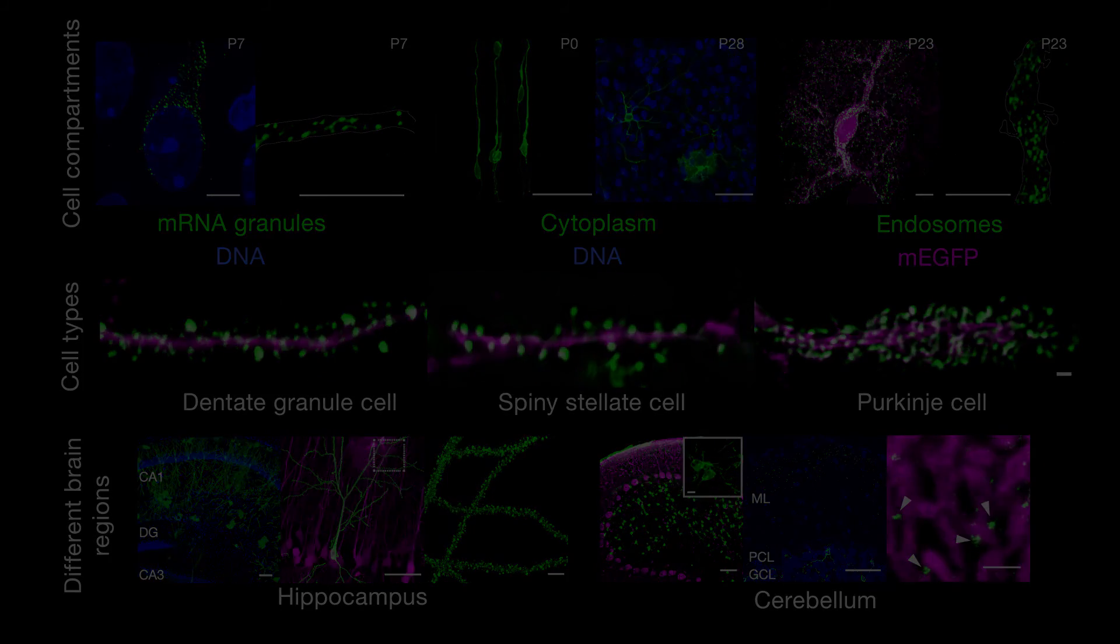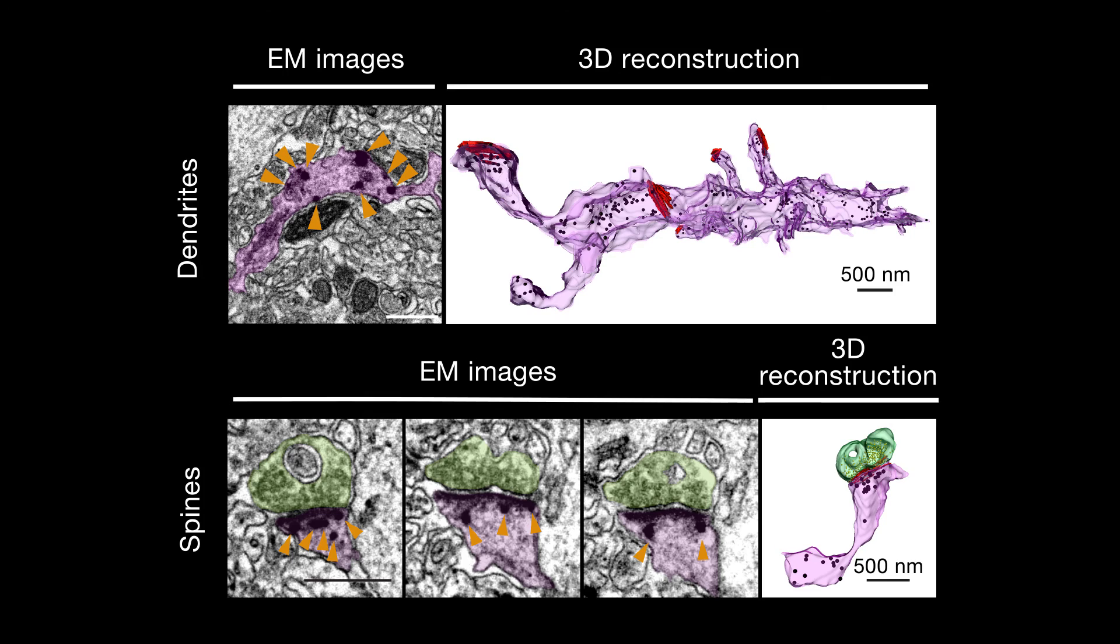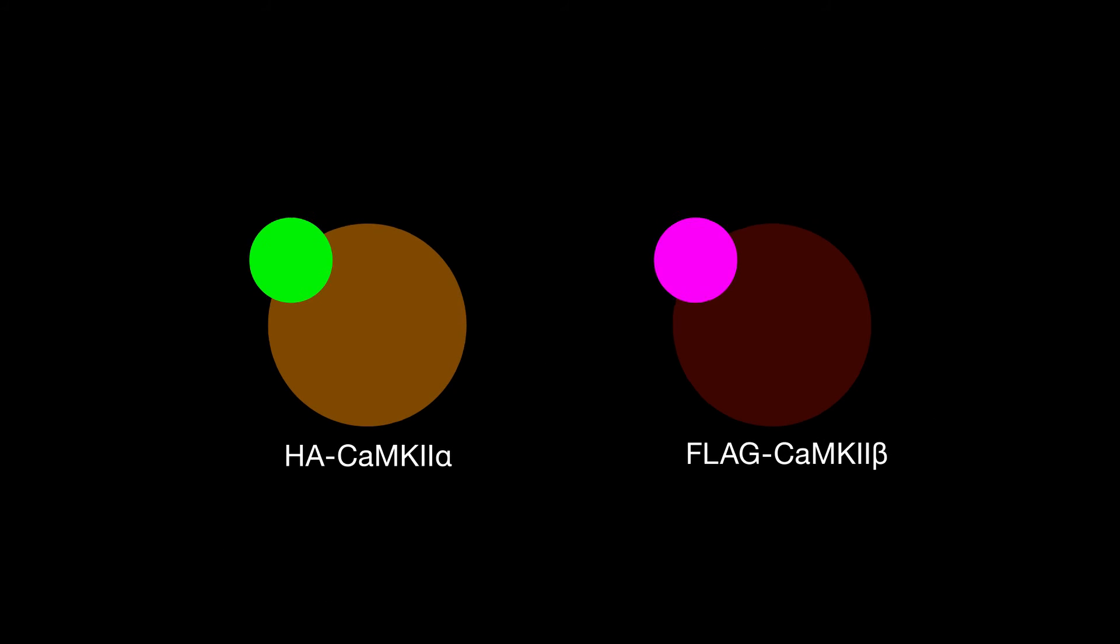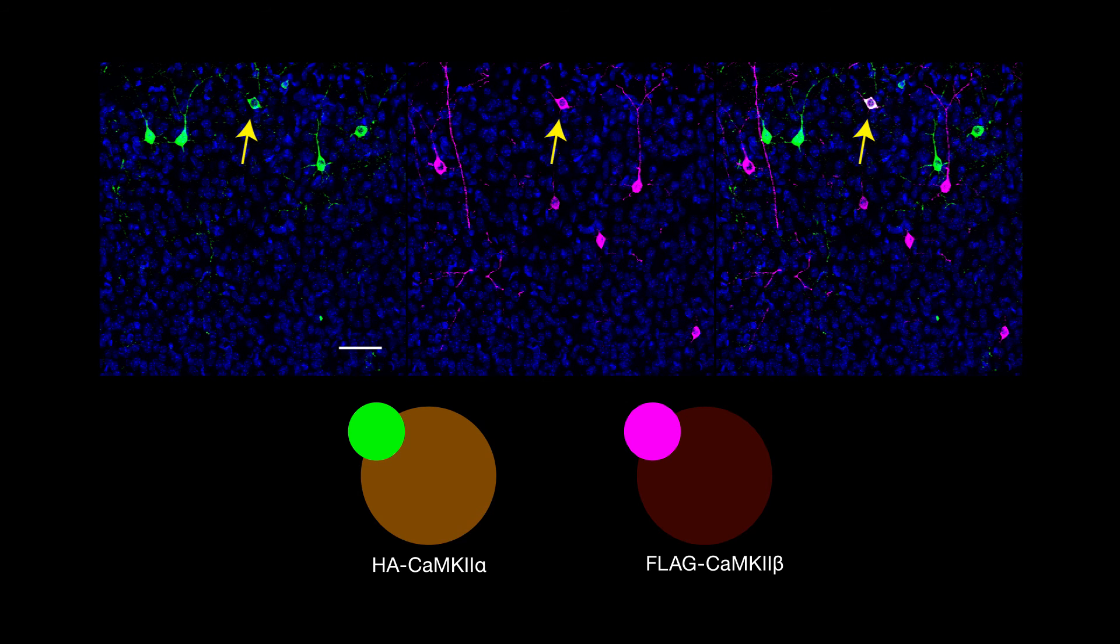Using electron microscopy, the tagged proteins could be located with nanometer precision. By incorporating two different kinds of tags, SLENDER could also be used to image two different proteins in a single cell.